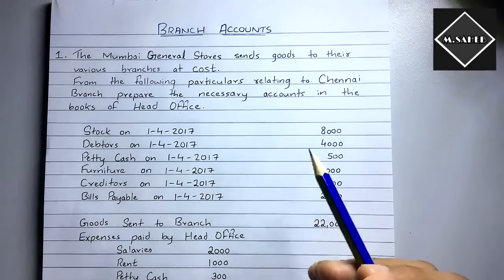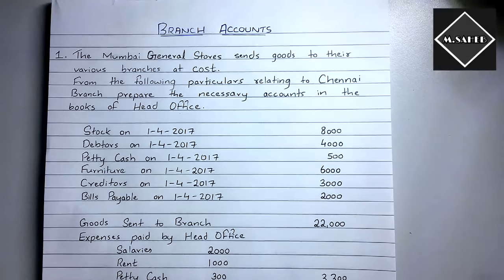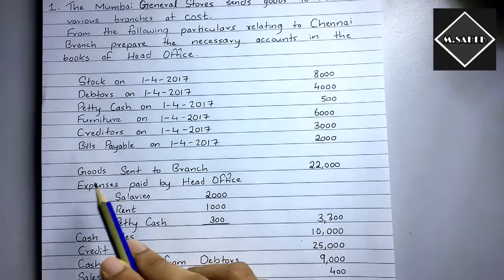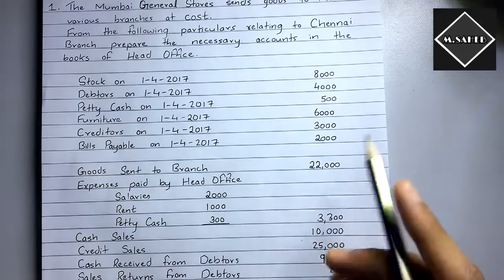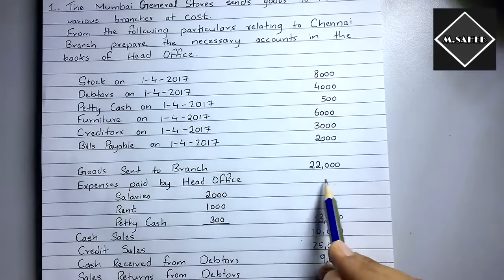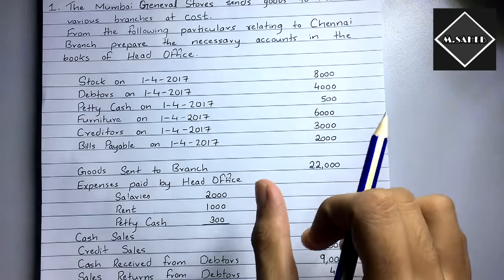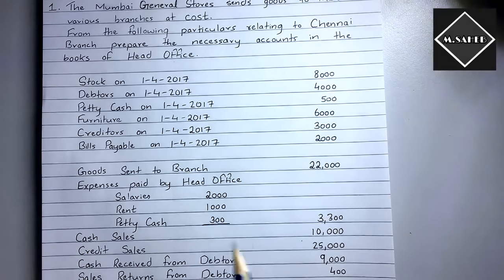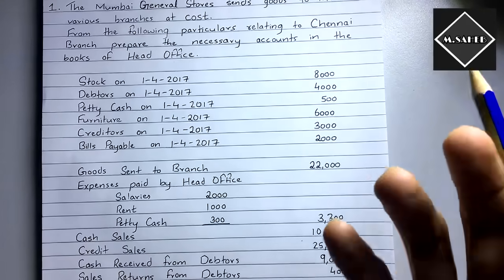Goods sent to branch means the head office sends goods to the branch. Here, the head office has sent 22,000 worth of goods, so this posting will come on the debit side of the branch account as 'To Goods Sent to Branch'. Then we have expenses paid by the head office — branches incur expenses like salaries, freight, and sales expenses, all paid by the head office.